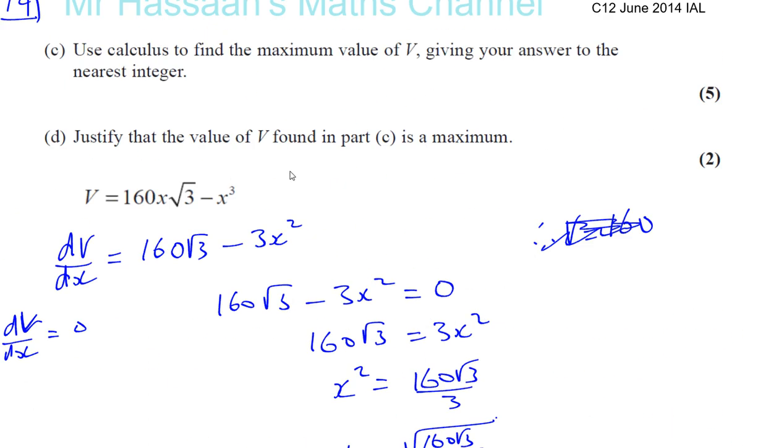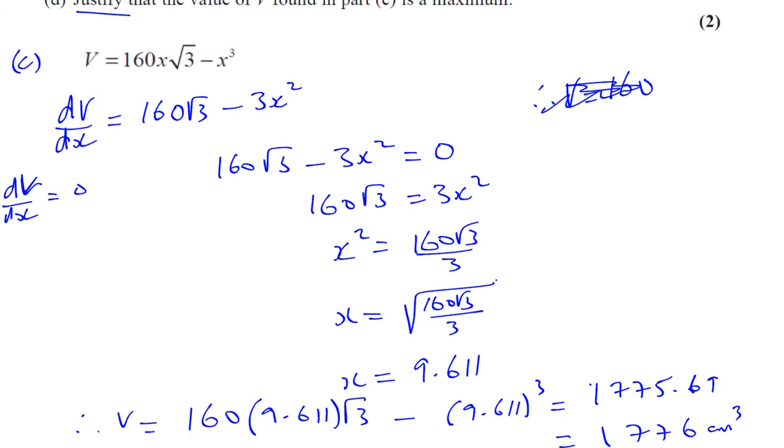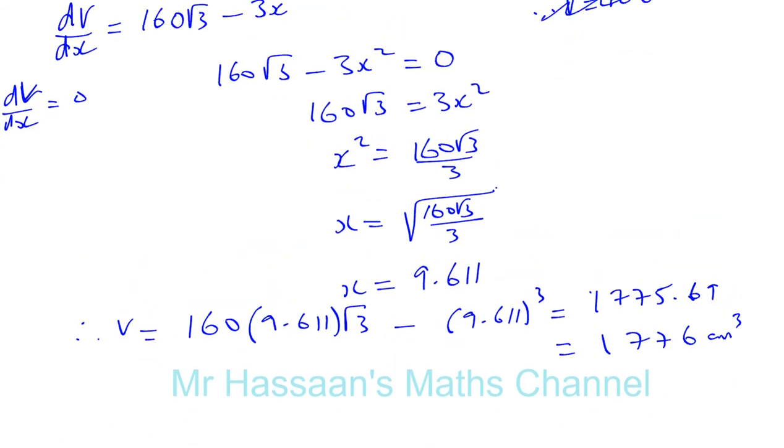Okay, then it says for part D. This is part C. Okay, part C. Justify that this value found is a maximum. Now to do that, to justify that it's a maximum, what we need to do is we need to take our differential that we found earlier.